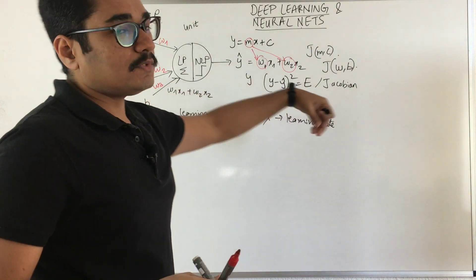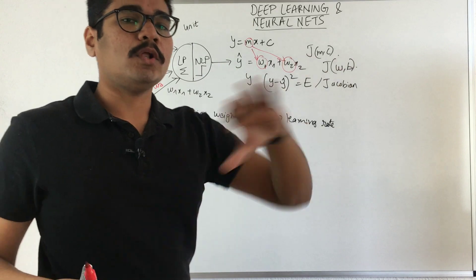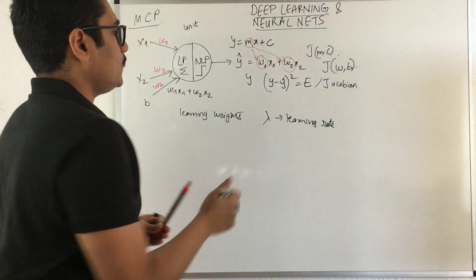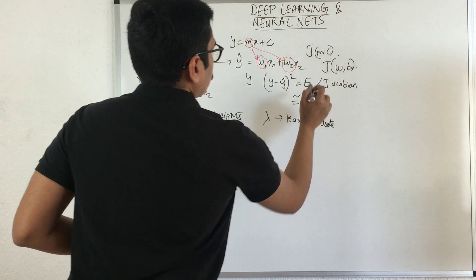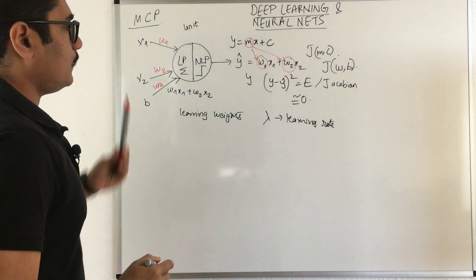We want to learn these particular weights so that our error produced at the end is minimal or converges to zero. But it cannot always be zero, it can converge to zero, approximately equal to zero. This is our end output that we want to achieve.